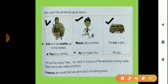Now look at the third box. The bus is gray. The bus — we use 'it,' I-T. It is a pronoun used in the place of bus. So we use the words they, he and it in place of the repeated naming words. These words are called pronouns.